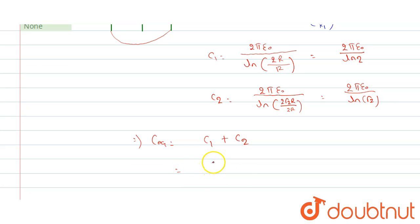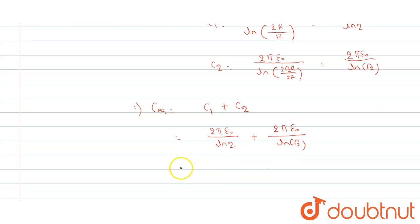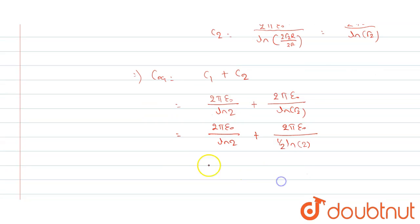C1 we have got 2π ε₀ divided by ln of 2. Now this can be written as 2π ε₀ divided by ln of 2 plus 2π ε₀ divided by ln of 2 to the power half and this half will come out here as half.